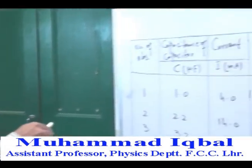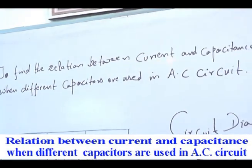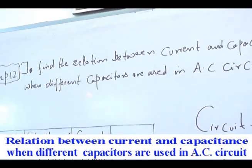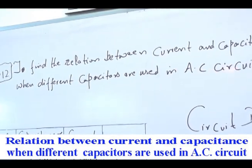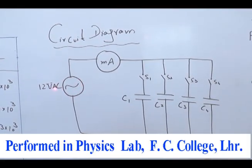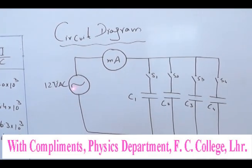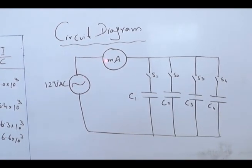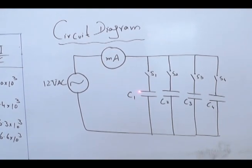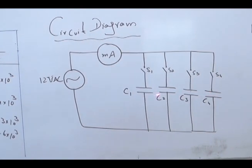Our experiment is to find the relation between current and capacitance when different capacitors are used in an AC circuit. In this experiment, we have a step-down transformer connected which will convert 220 volt into 12 volt AC. Then we have a milli-ammeter connected in series, and we have four capacitors C1, C2, C3, and C4 of different capacitance.